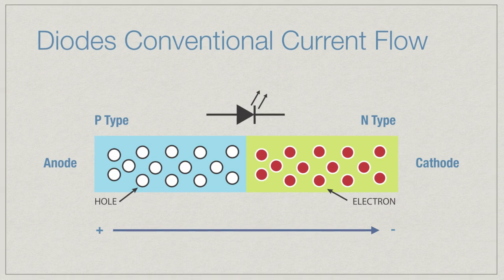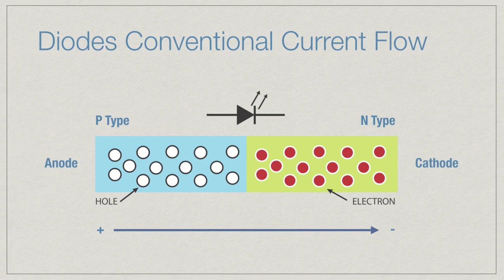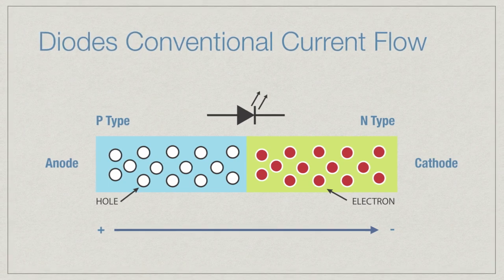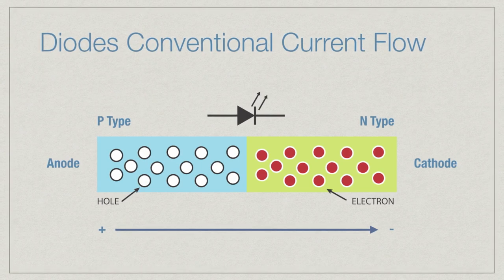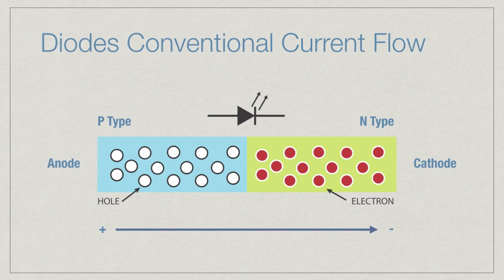As we covered in the first tutorial, an LED contains two semiconductors. The N-type has more electrons, while the P-type has holes where electrons used to be. Whenever a charge is applied, the electrons move from the N-type to the P-type, and electrons won't flow in the opposite direction. With conventional current, we say that current flows from the anode to the cathode.